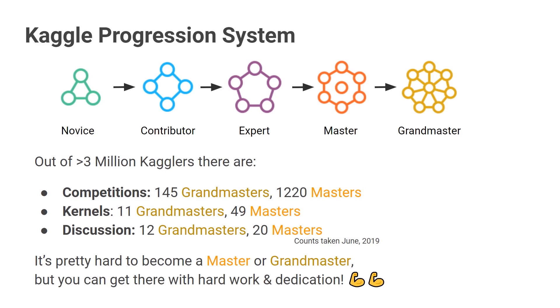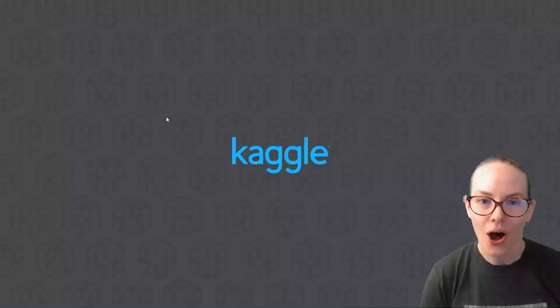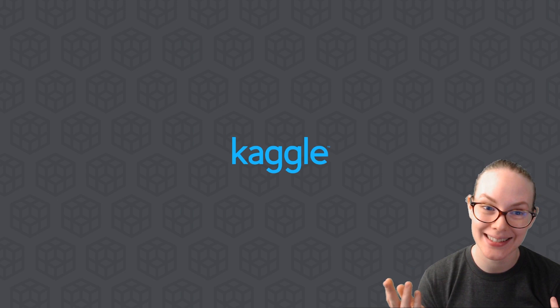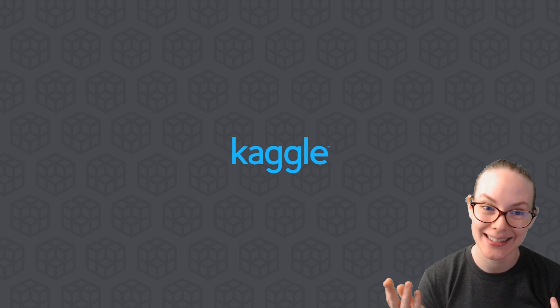It is pretty tricky to become a grandmaster. We have more than 3 million Kagglers right now — as of June 2019, we only had about 145 competitions grandmasters, 11 kernels grandmasters, and 12 discussion grandmasters. So it's a pretty small, elite group, but you can get there with hard work and dedication by contributing to the community and producing useful content. I believe in you! Alright, that's all the Kaggle vocabulary I wanted to introduce you to today. Now that you know some of the words people are using on Kaggle, I hope to see you on the site, in the forums, entering competitions, or writing some kernels. I love seeing people's kernels. See you on Kaggle — bye!